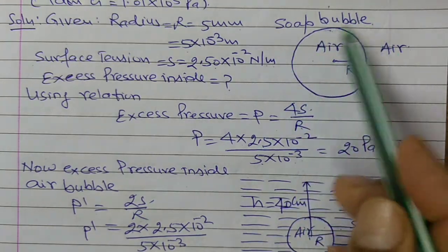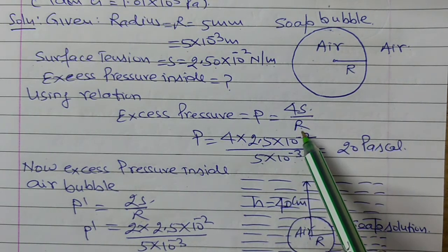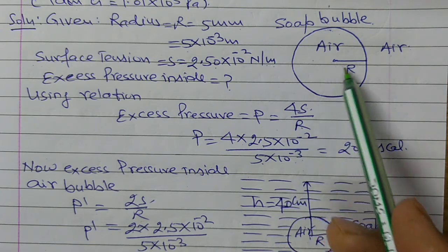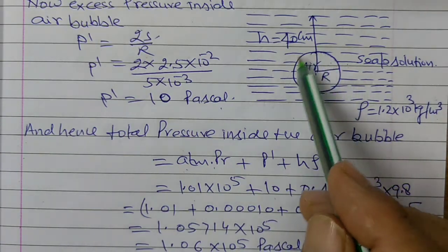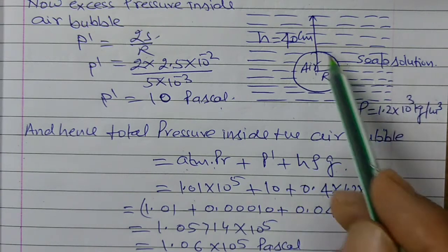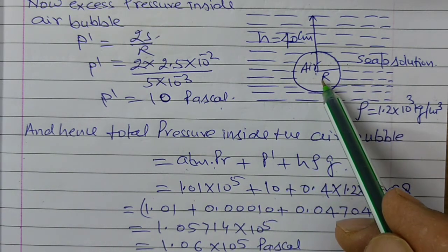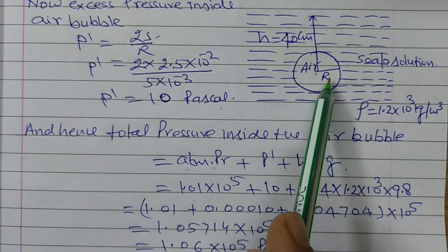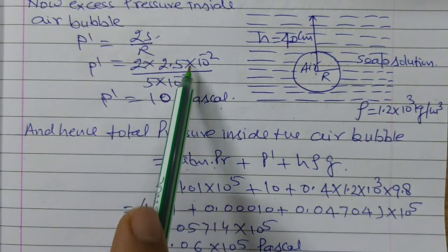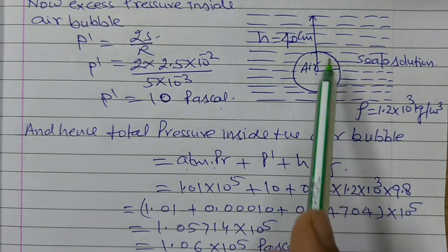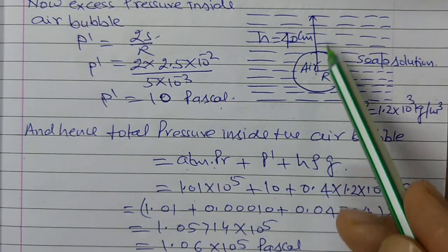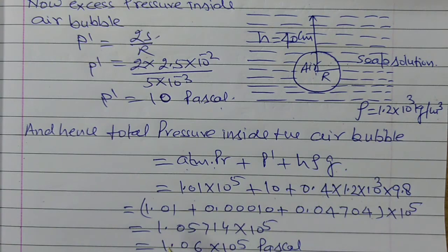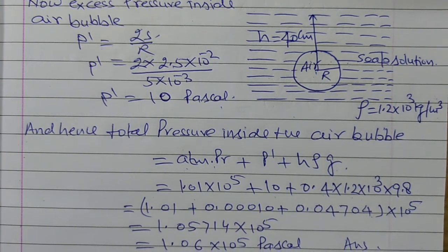So in this way we solved this problem. For the soap bubble, the excess pressure formula is P = 4S/R — there were two interfaces, hence 4S. Putting values: 20 Pascal. And for the air bubble inside the soap solution, to find total pressure: first calculate excess pressure using 2S/R = 10 Pascal. Then total pressure = atmospheric pressure + excess pressure + pressure due to liquid column = 1.06×10⁵ Pascal. That is the answer. I hope you understood. Thank you.